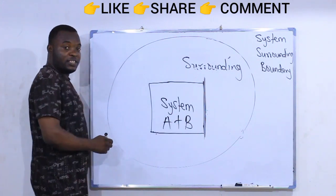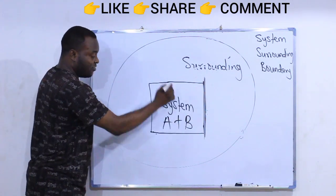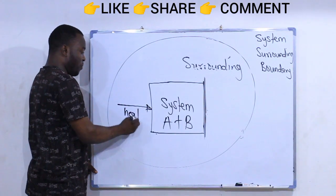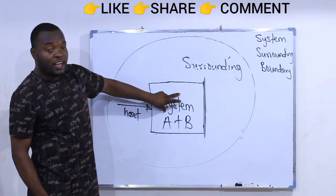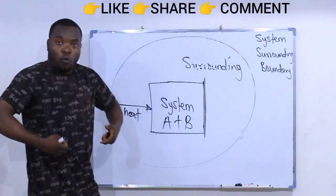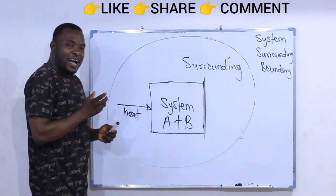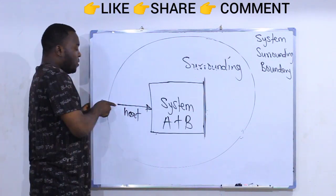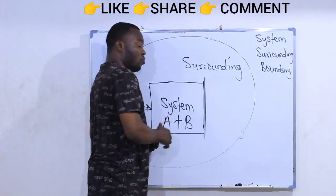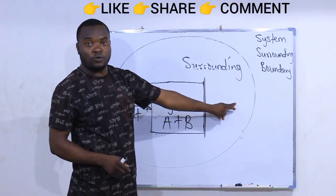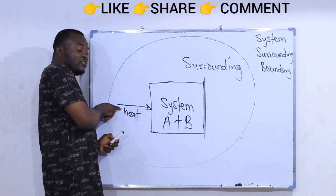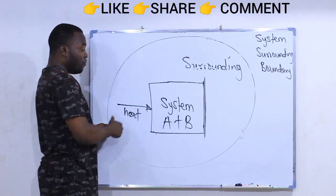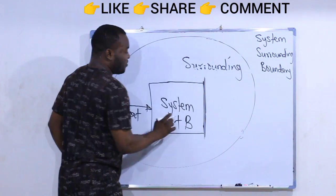Let's take for instance you heat up this reactant — that is the system. You apply the heat. If you apply heat to this system, the content, which is the reactants present inside this system, will acquire energy. As heat increases, the energy of your system increases. It is also possible that the system gives out energy to the surrounding. When heat is absorbed from the surrounding into the system, we say that the process is endothermic.